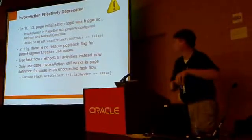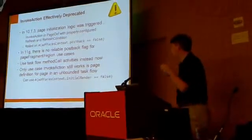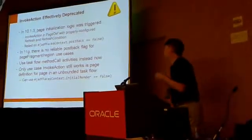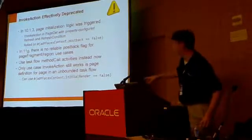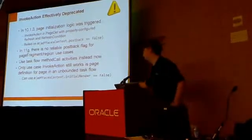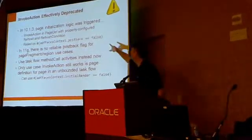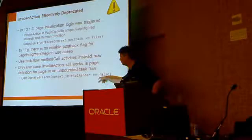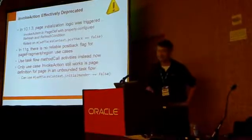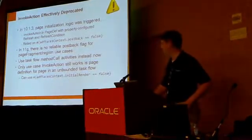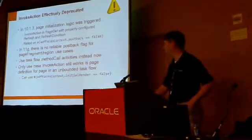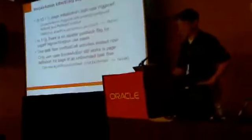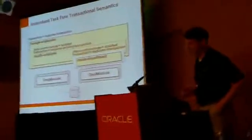Audience question: should the last one be initial render set to false or true? The answer is true — sorry, they flip-flopped the logic on the post-back. It is the initial render property set to true rather than checking for not being a post-back. I'll fix that before I close the slide.